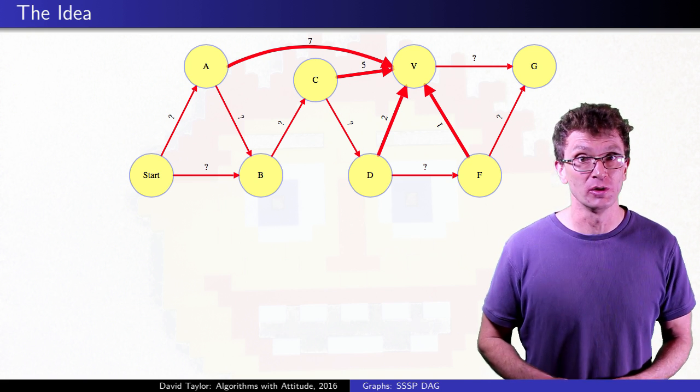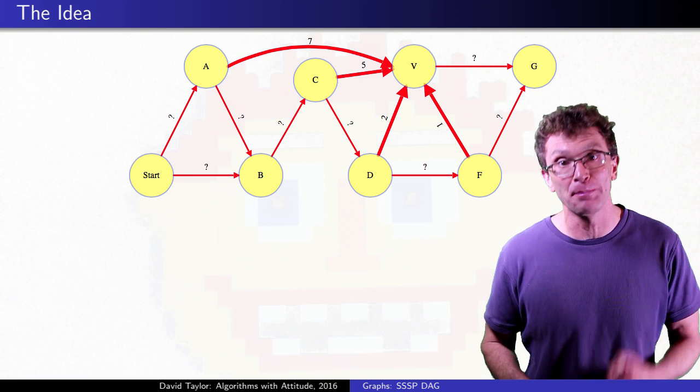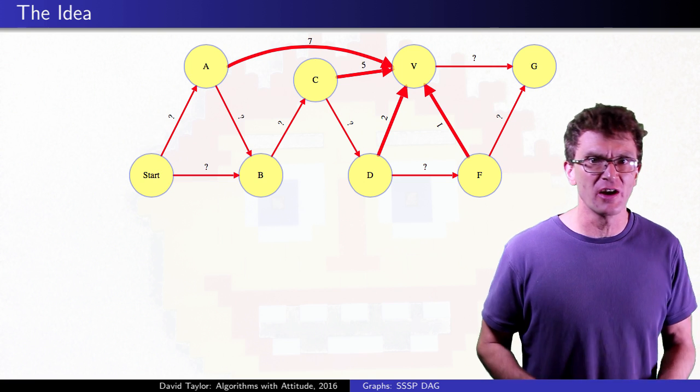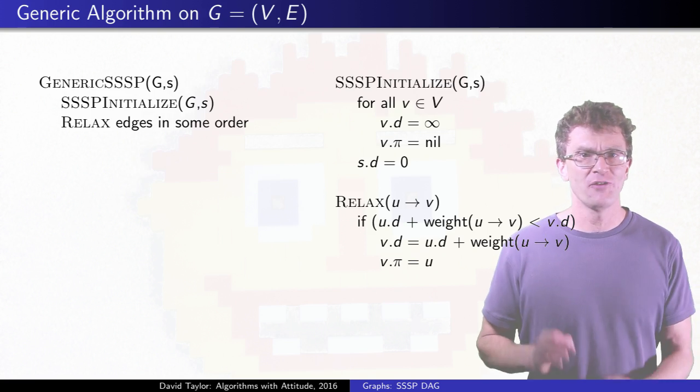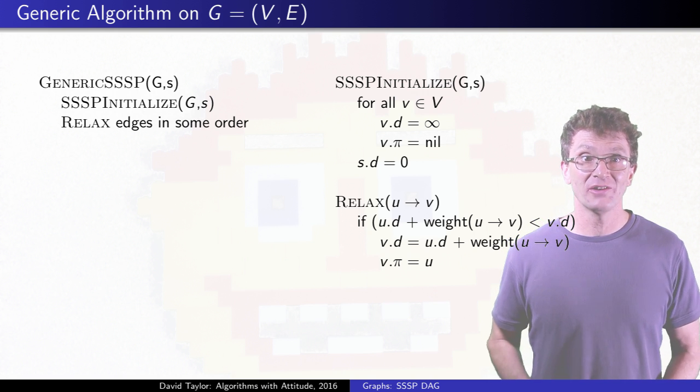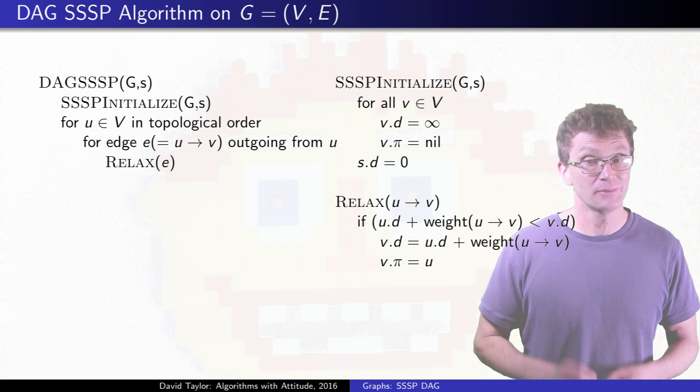That's actually easy to do here, because the graph is acyclic. If you consider vertices in topological order, every vertex leading to v must have been considered before v. Modifying our generic algorithm, relax edges out of vertices taken in topological order. That's the algorithm.